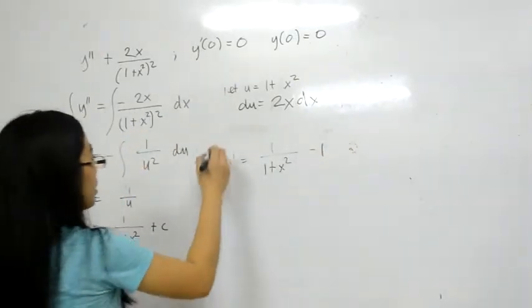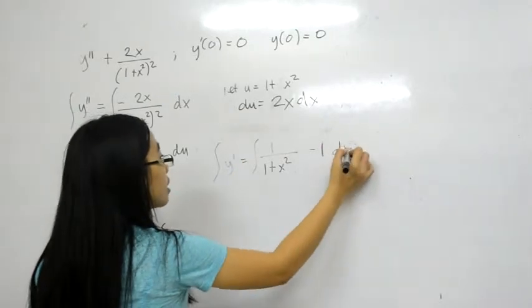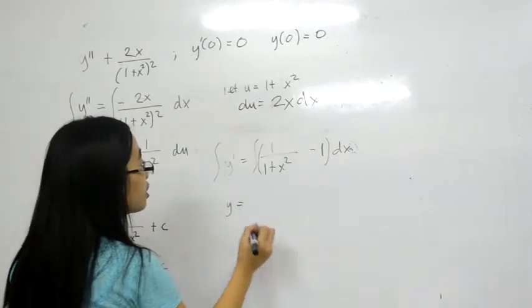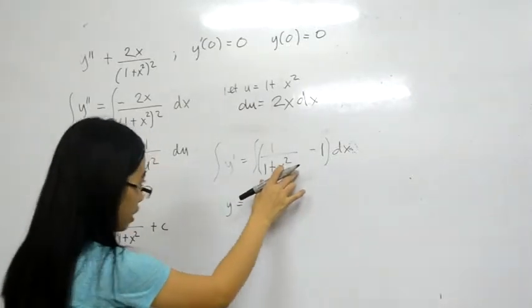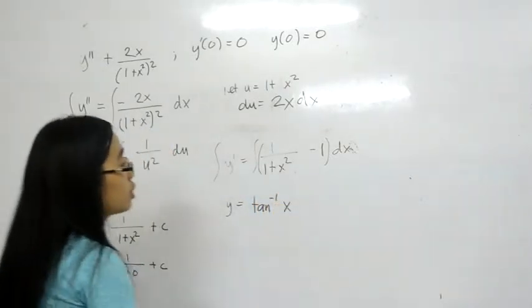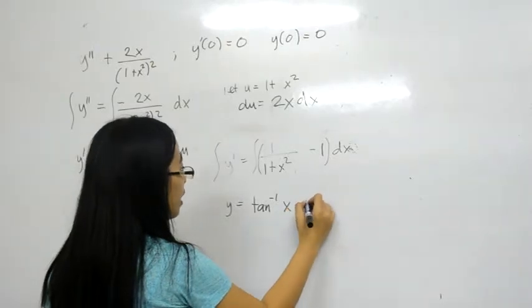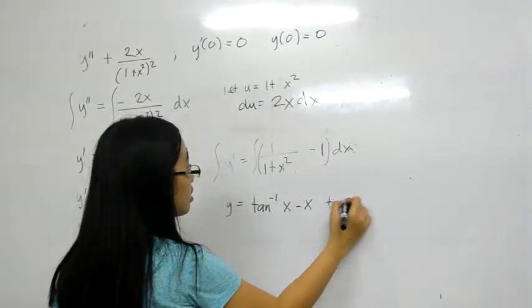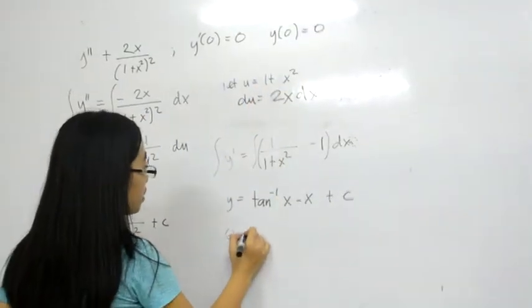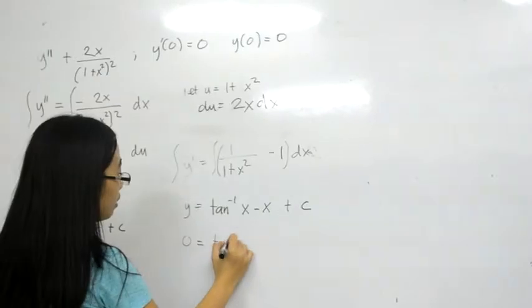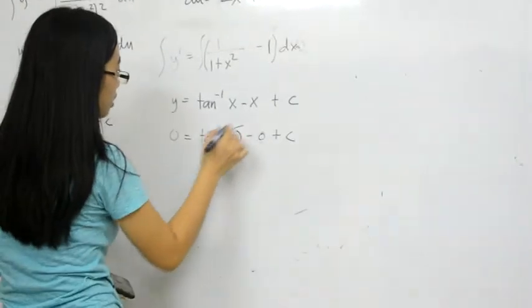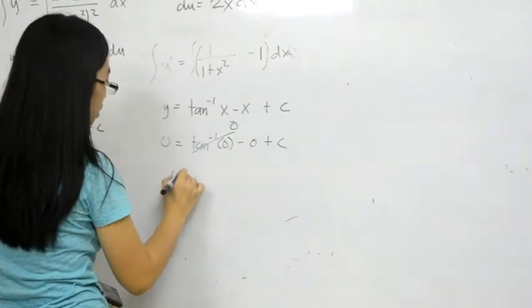So we have to integrate this again both sides. So we have y is equal to... arctan(x) minus x plus C. To get the value of C, we use the condition here. 0 equals arctan(0) minus 0 plus C. So this is equal to 0. Our C is 0.